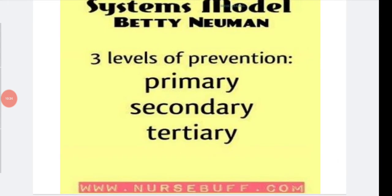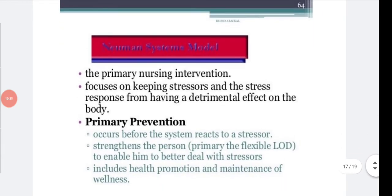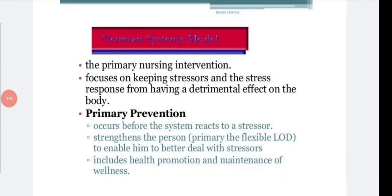Newman gives three levels of prevention: primary, secondary, and tertiary. Primary prevention focuses on keeping stressors and the stress response from having a detrimental effect on the body — the person should not come into contact with the stressor. It includes health education, health promotion, maintenance of wellness, nutritional intake, exercise, coping strategies, and counseling.